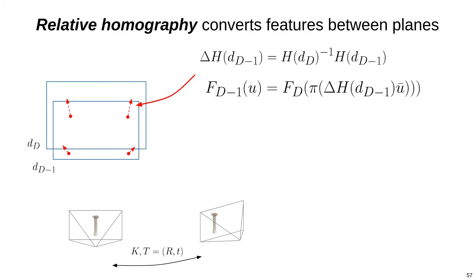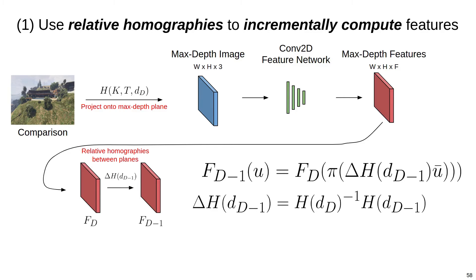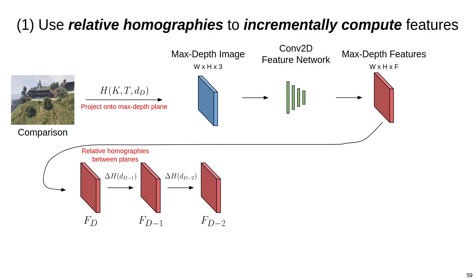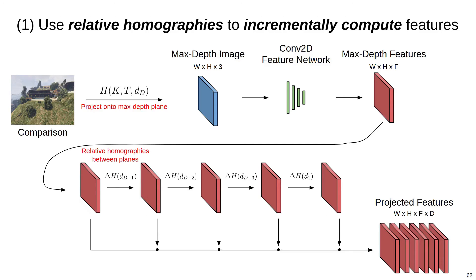Now, given h of d and h of d-1, we can compute delta h simply as h of d inverse times h of d-1. Now that we have this relative homography, we can build f d-1 by applying delta h to the pixel domain of fd and bilinearly sampling. So now that we have delta h, we can compute f d-1 from fd, and f d-2 from f d-1, and so on, until we've computed feature maps for all the planes and depth samples. These projected features correctly compensate for the viewpoint change between the cameras, but we only had to apply the bulk of the convolutional layers that extract features from the image data once.